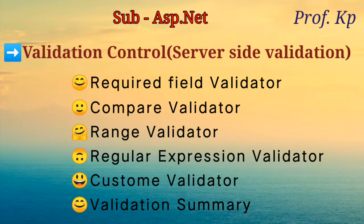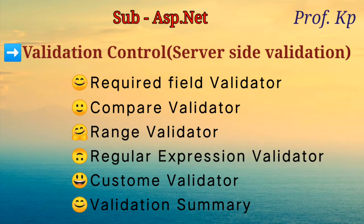So if you want a particular control's value to be compulsorily entered, and until that value is input the form should not be submitted, then the Required Field Validator is for that. You will often see an asterisk (*) in red color before a field, meaning that field is compulsory — you cannot leave it blank. You set the ControlToValidate property and an error message to display if the user doesn't input a value.